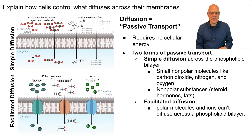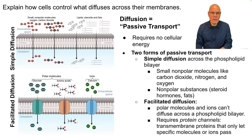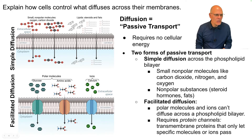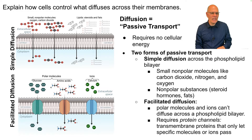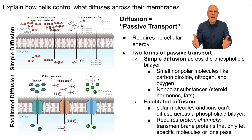Facilitated diffusion is for polar molecules and ions that can't diffuse across the phospholipid bilayer, so they require protein channels. These are transmembrane proteins that go all the way through and only let specific molecules or ions pass. You see one here for glucose, one for amino acids — both polar molecules — and one for an ion such as calcium. Others exist for ions such as sodium or potassium.